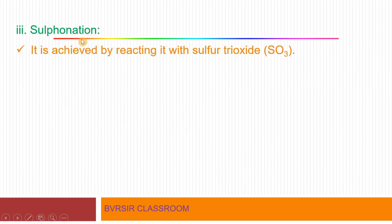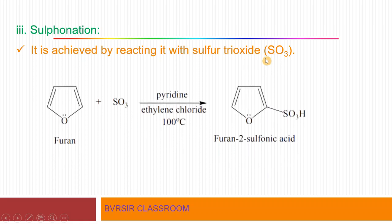One more reaction is the sulfonation reaction. Sulfonation takes place in the presence of sulfur trioxide, SO3. SO3 acts as the electrophile and attacks at the second position of furan via electrophilic substitution. The product formed is furan-2-sulfonic acid, where the SO3H sulfonic acid group is attached at the second position.